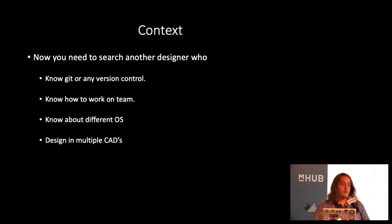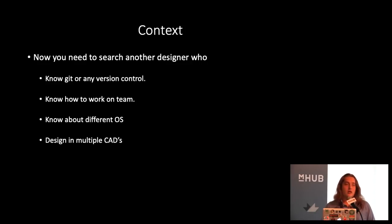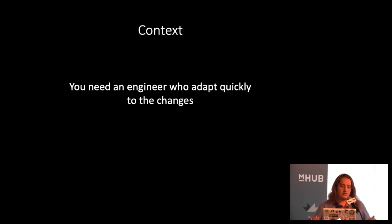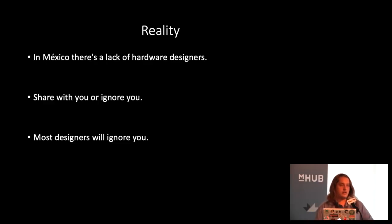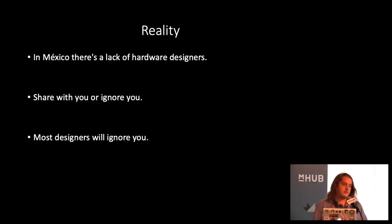Since you have to design a project, you need more designers — someone who knows version control or Git, who knows how to work in a team, who knows how to use Linux, Mac OS, or Windows, and who can design across multiple platforms. But that's almost impossible to find. What you really need is an engineer who adapts quickly to changes — if you introduce new software or a new tool, the engineer can learn it without complications. The reality in Mexico is there are two types of designers: those who share their knowledge with you, or those who ignore you completely and just go off with their projects without sharing.